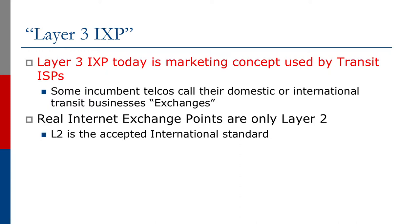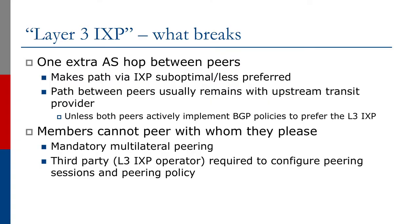If we look at a Layer 3 exchange design, there are many things that cause problems for potential members. First off, there's one extra autonomous system hop between peers, and that makes the path via the exchange point suboptimal. The less preferred path between peers usually remains with the upstream transit provider.